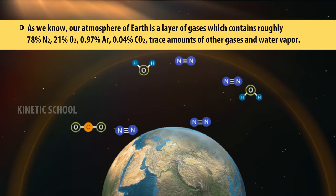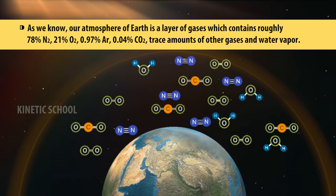As we know, our atmosphere of Earth is a layer of gases which contains roughly 78% nitrogen, 21% oxygen, 0.97% argon, 0.04% carbon dioxide, trace amounts of other gases and water vapor.